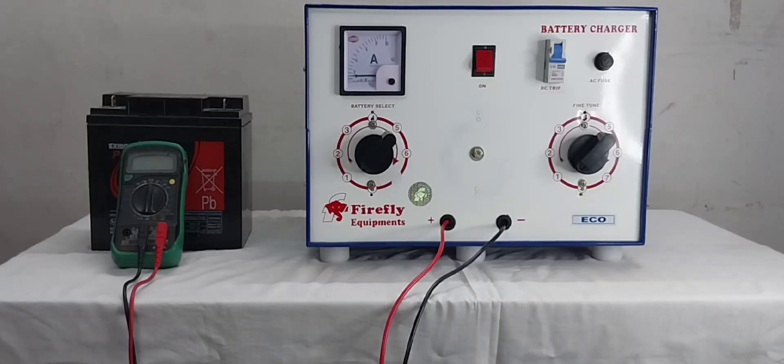Welcome to Firefly Equipments Demo Video Model Eco 72V 10A. In this model we can charge 35A to 200A capacity. This model has ampere meter, MCB, dripper with heavy duty copper transformer.